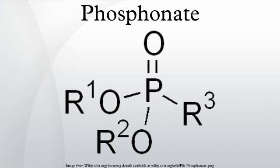Phosphonate compounds: AMPA (aminomethyl phosphonic acid), degradation product of glyphosate; vinyl phosphonic acid, a monomer; DMMP (dimethyl methyl phosphonate), one of the simplest phosphonate diesters; HEDP (1-hydroxyethylidene-1,1-diphosphonic acid), used in detergents, water treatment, cosmetics and pharmaceuticals; ATMP (aminotris methylene phosphonic acid), chelating agent; EDTMP (ethylenediamine tetra methylene phosphonic acid), chelating agent; TDTMP (tetramethylenediamine tetra methylene phosphonic acid), chelating agent; HDTMP (hexamethylenediamine tetra methylene phosphonic acid), chelating agent.